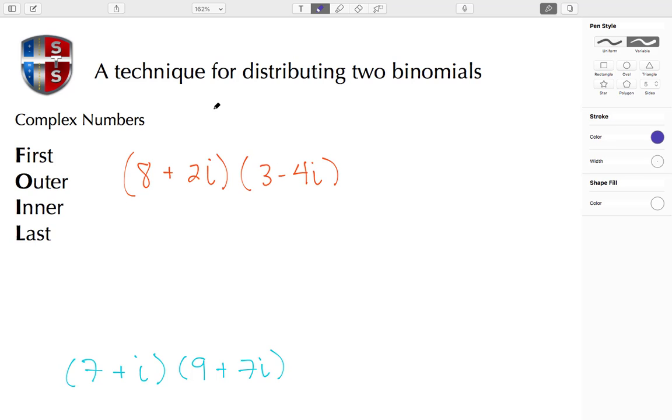Welcome back to Spellman Math Tutorials. In today's tutorial, we're going to apply the FOIL method to complex numbers. So FOIL stands for First, Outer, Inner, Last. Let's start with F for First, these are the first two terms.